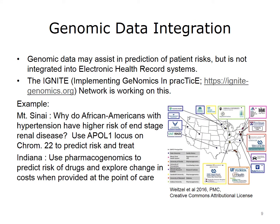Another kind of data that is increasingly important but not integrated is genomic data. We have rapidly increased our ability to process genomic information, but we can't exchange it easily, and it's not integrated into most analytic or healthcare systems. The Implementing Genomics in Practice, or IGNITE, network was funded by the National Institutes of Health to improve the integration of this data. Mount Sinai in New York is looking at why African Americans with hypertension have more kidney failure or end-stage renal disease, finding that particular alleles from the APOL1 locus vary by race and may help predict risk. Indiana is using pharmacogenomics to help people pick the right drugs and doses to avoid costly complications. The IGNITE network wants to see if providing this information reduces overall healthcare costs.